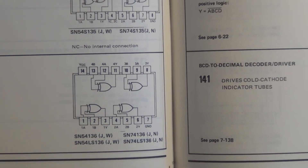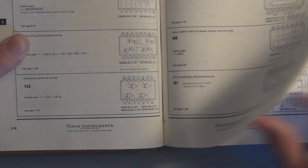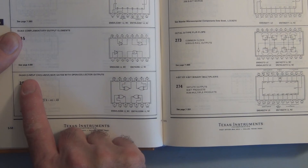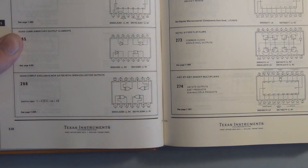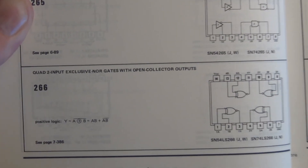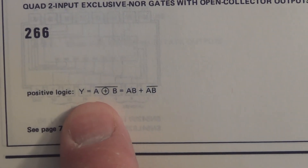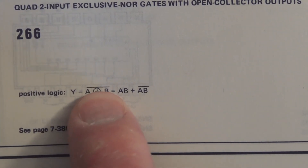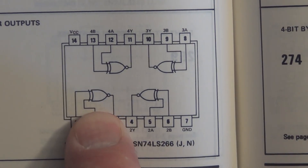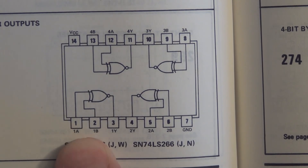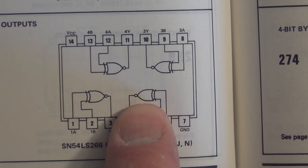The exclusive NOR gate is a 74266 — a quad two-input exclusive NOR gate with open collector outputs. The Boolean expression shows Y equal to A exclusive-OR B with the inverter symbol — the line over it. There are four exclusive NOR gates in a 14-pin DIP package, and you can see the inverter symbol on the output.